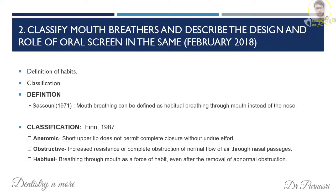The classification of mouth breathers is: anatomic — where there is a defect in anatomy, like a short upper lip which prevents closing of the mouth; obstructive — where something is obstructing the airway, forcing mouth breathing; and habitual — where even after removal of the obstruction, the patient continues to breathe through the mouth because it has become a habit. This classification is given by Finn.